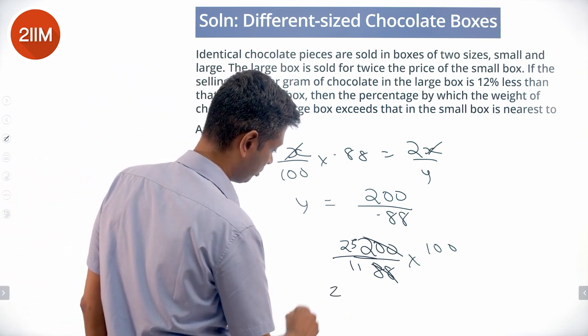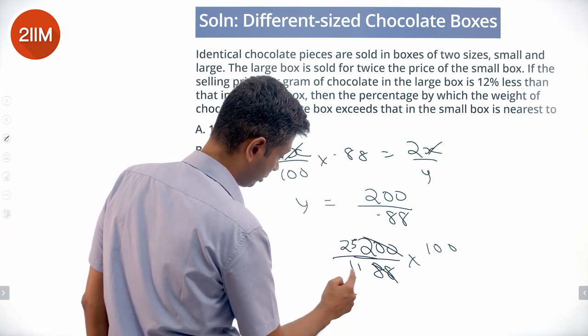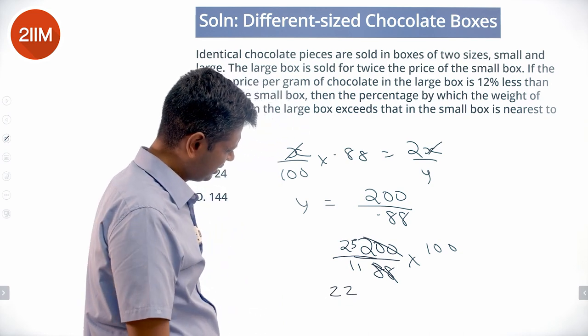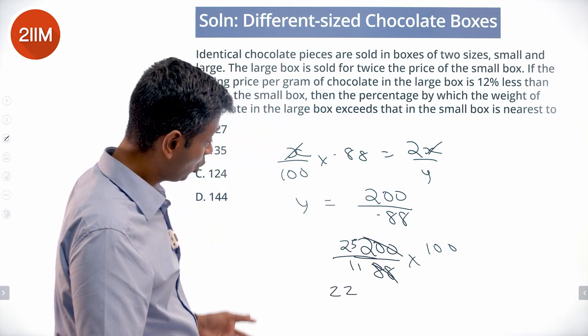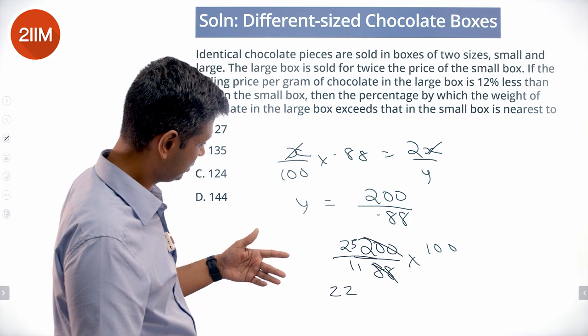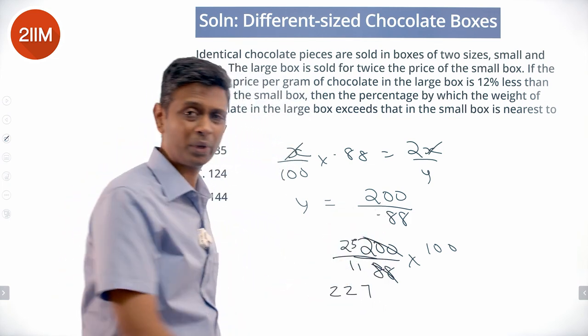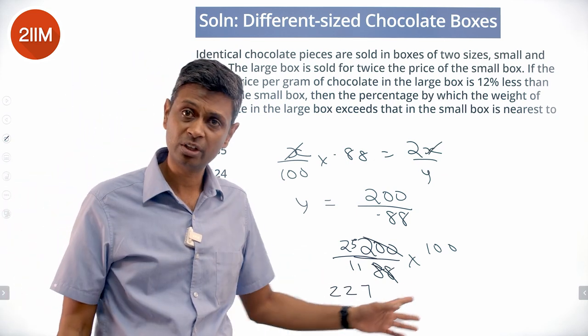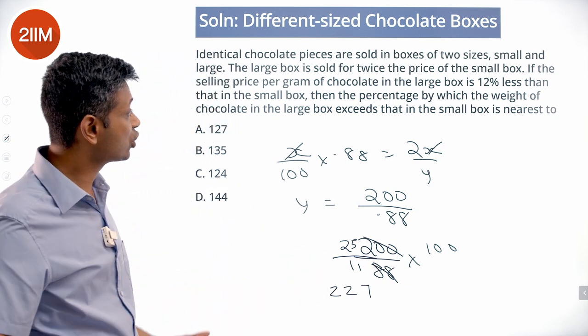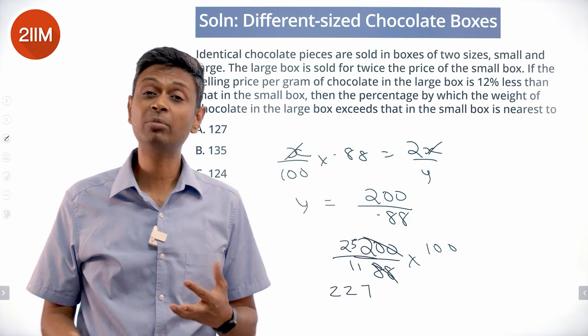It was 2 times 3 by 11, another 2 times 30 by 11, 22 goes into 7... it is 22.72, somewhere around 227. That's what this number should be, 2.27, 227. So the large box is 2.27 times the small box weight.